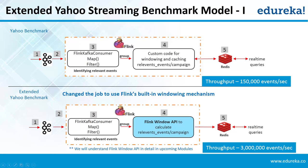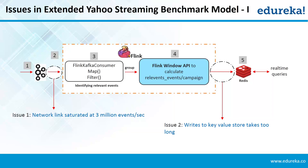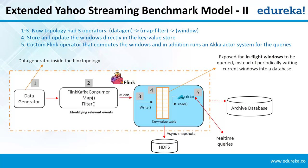However, there were still two issues in Model 1. Issue 1 was that the network link between Kafka and Flink saturated at 3 million events per second. Issue 2 was that it took too long to write to the key-value store Redis. To address Issue 1, they moved the data generator into the Flink topology, replacing Kafka. To address Issue 2, they created a key-value store inside the processor itself, exposing the windows to be queried in real-time using Akka instead of the Redis server, so windows could be accessed in real-time as soon as they were created.